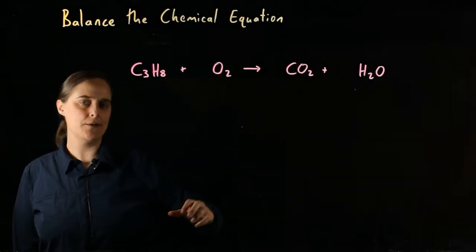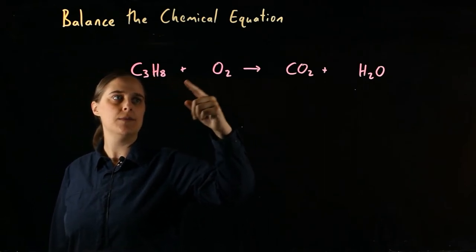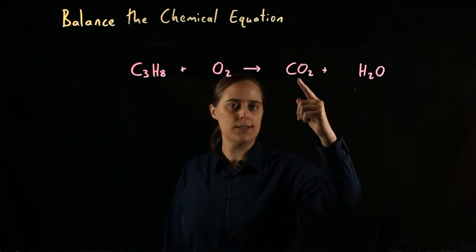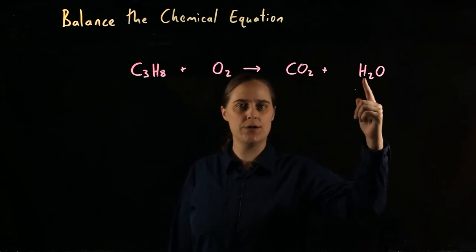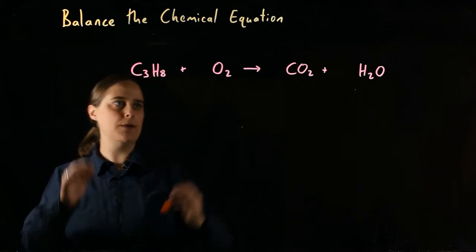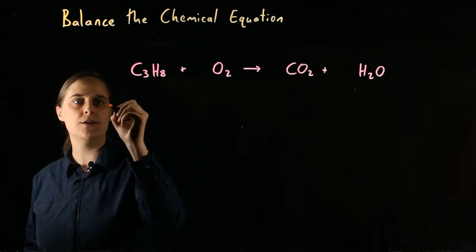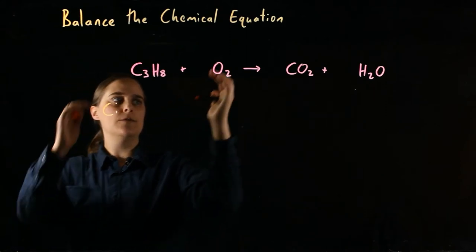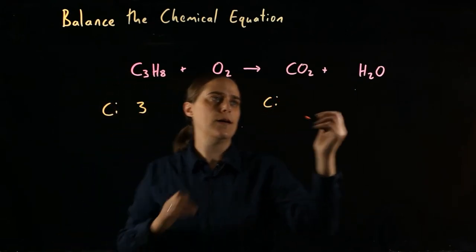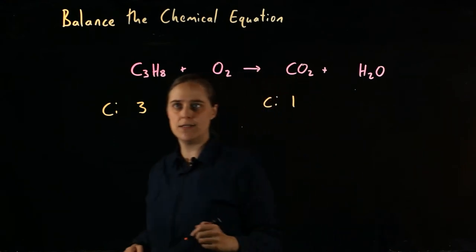In this unbalanced equation, we have propane C₃H₈ plus oxygen O₂ reacting to make carbon dioxide CO₂ plus water H₂O. Like always, we count how many atoms of each element we have before the reaction versus after. Before the reaction, we have three carbon atoms. After, we only have one. Carbon is not balanced.